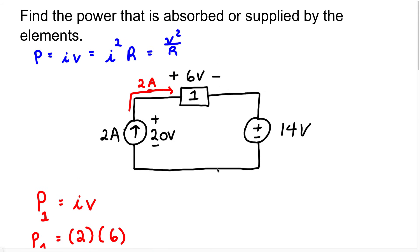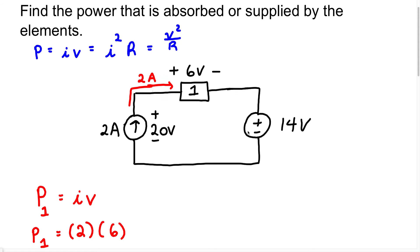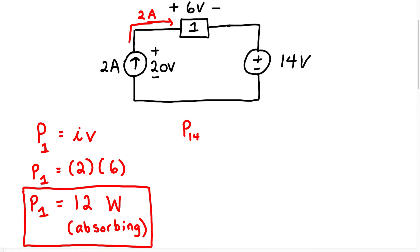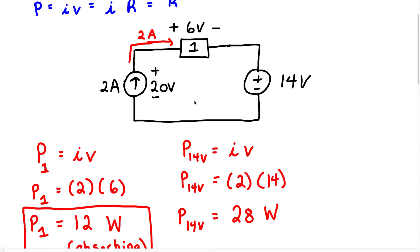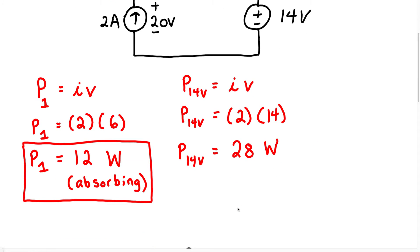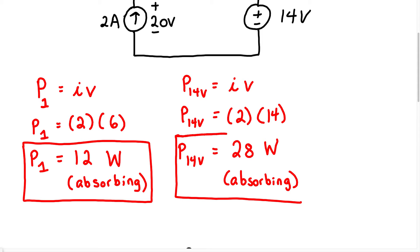Now let's look at the second element, the 14-volt source. The power equals I times V. Since this circuit is in series, the current flowing through the 14-volt source is also 2 amps. So we have 2 multiplied by 14 volts, which gives us 28 watts. Because this is a positive power, this element is also absorbing power. Any time you get a positive answer, that element is absorbing power.